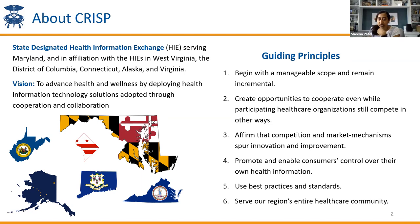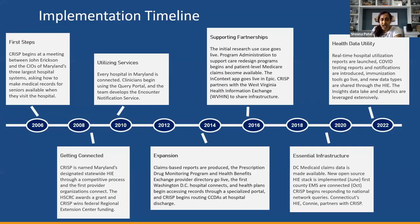CRISP is the state-designated health information exchange for Maryland. We have affiliate partners in West Virginia, DC, Connecticut, Alaska, and Virginia. So if you have patients who are residents of or are going to facilities in those states, we do have data sharing occurring across those borders. This is a quick snapshot of our timeline to give you a sense of where we were when we were first conceived and the evolution of CRISP as an HIE.